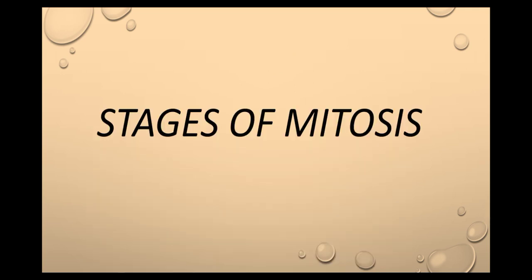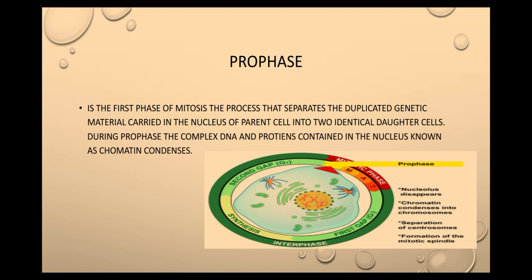Next, the stages of mitosis. First, prophase. It is the first phase of mitosis — the process that separates the duplicated genetic material carried in the nucleus of a parent cell into two identical daughter cells. During prophase, the complex of DNA and proteins contained in the nucleus, known as chromatin, condenses.